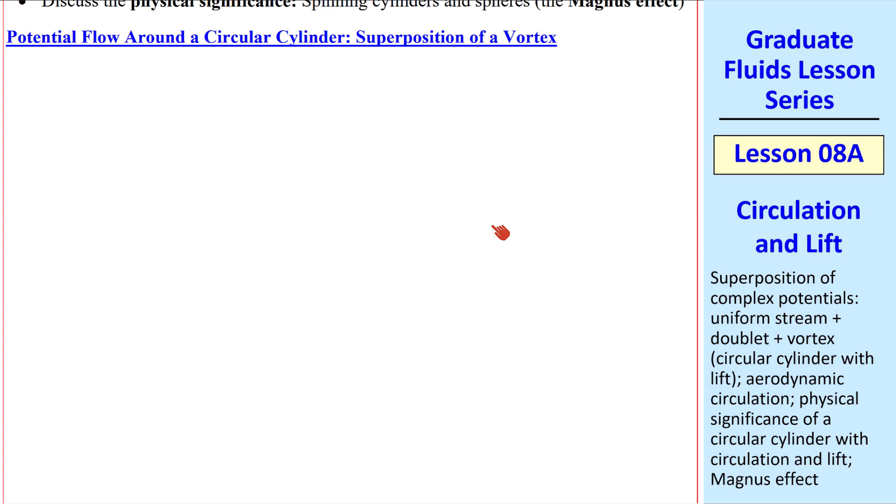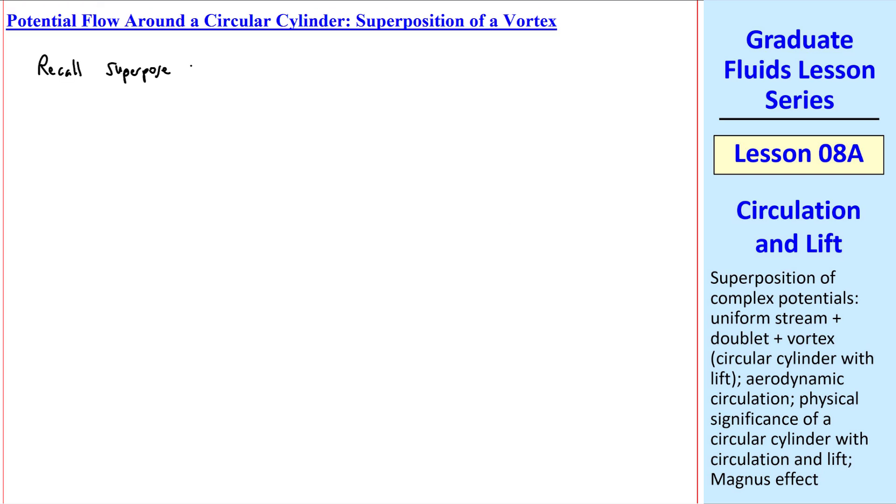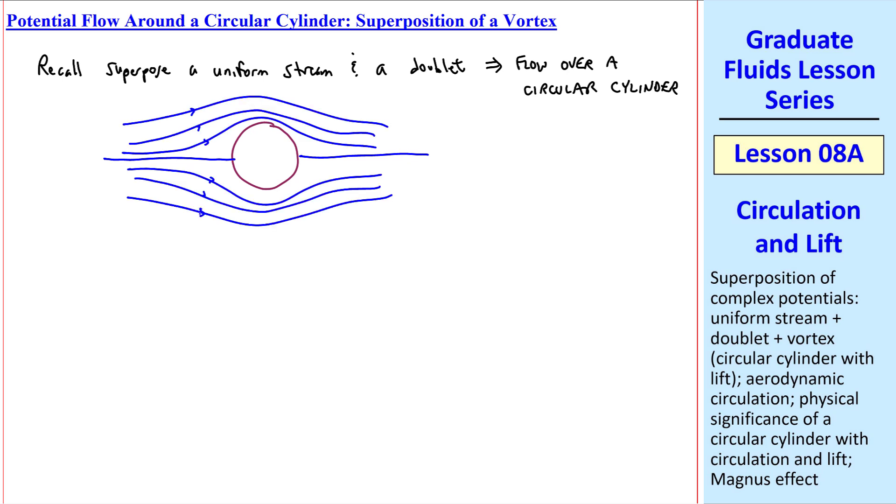By way of introduction, recall that if we superpose a uniform stream and a doublet, we can model potential flow over a circular cylinder, which we discussed in a previous lesson. Here's what the streamlines look like with two stagnation points. Inside are our streamlines from the doublet, but we don't really care about those in this problem. Instead, we pretend that this circle of radius a is a wall. Thus, we have flow over a circular cylinder.